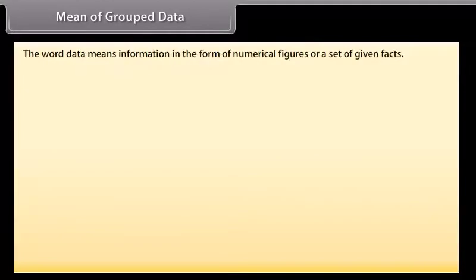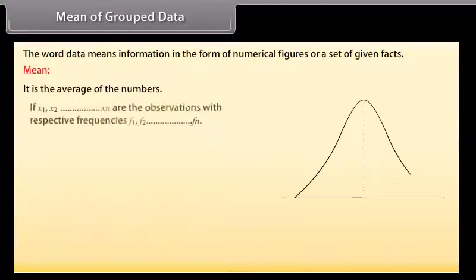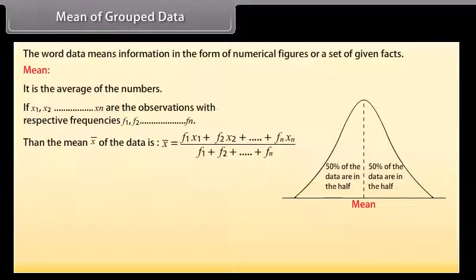Mean of grouped data. The word data means information in the form of numerical figures or a set of given facts. Mean is the average of the numbers. If x1, x2, and so on till xn are the observations with respective frequencies f1, f2, and so on till fn,